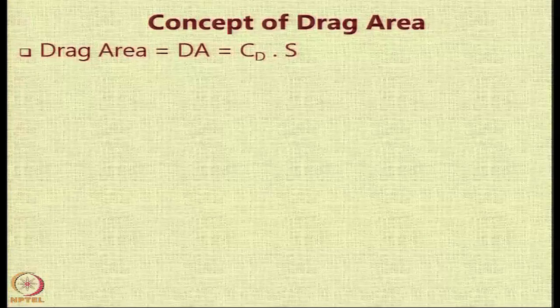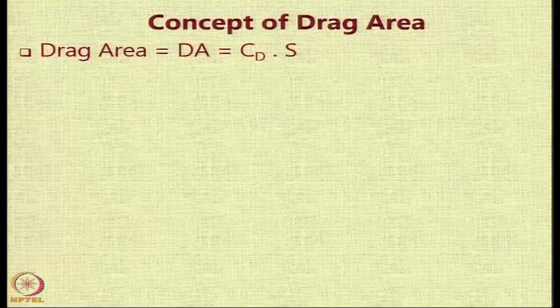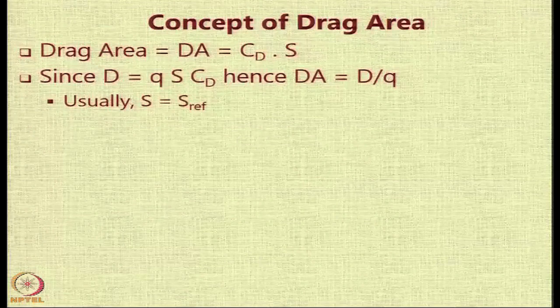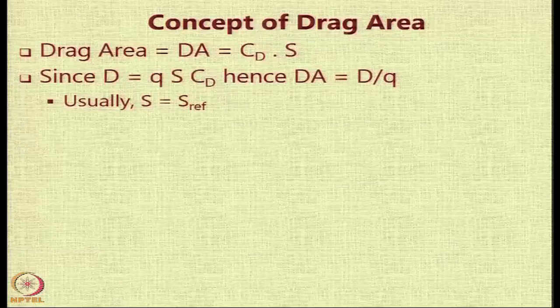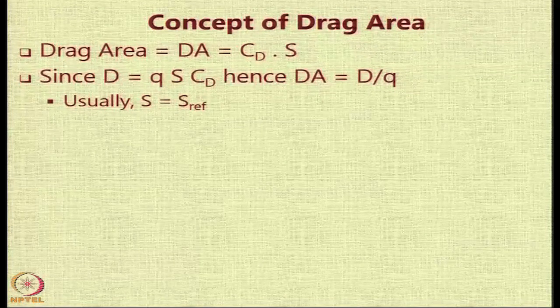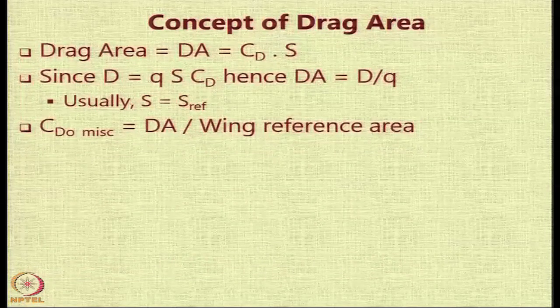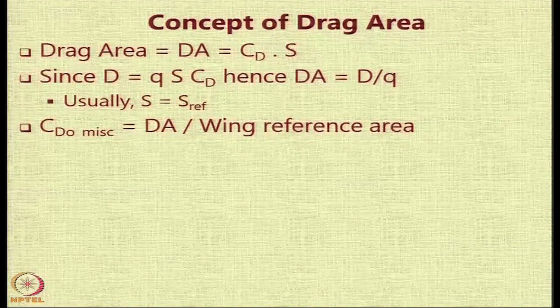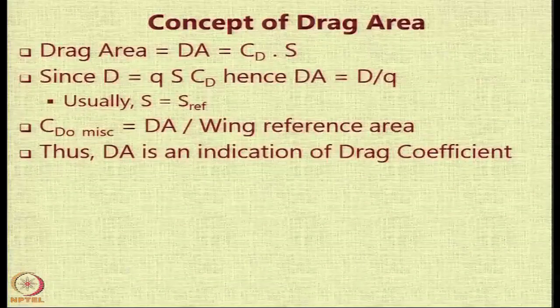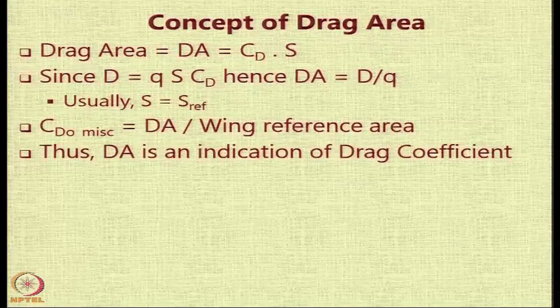The concept of drag area handles the drag of miscellaneous items. Drag area is the product of the drag coefficient of a particular body multiplied by its area. Since drag D = q × S × CD, drag area equals D/q, which has the same numerical value as S × CD. The miscellaneous drag coefficient CD0_misc equals the total drag area divided by the wing reference area — you sum drag areas of all components and divide by the wing reference area.